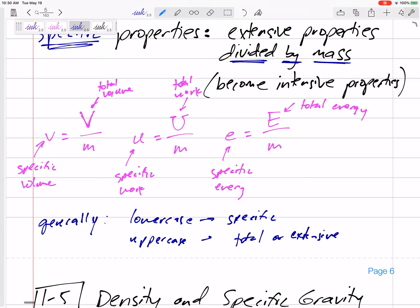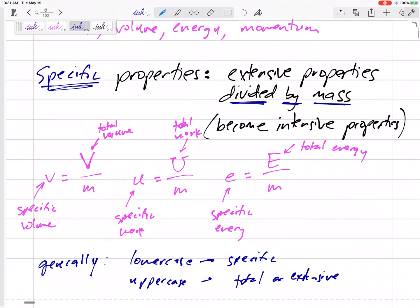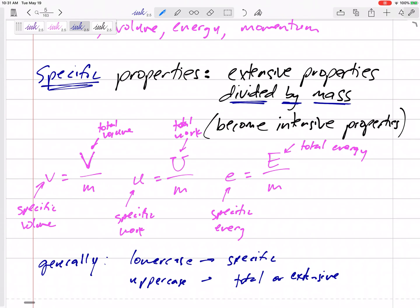Uppercase V is total volume. Uppercase U, total work. Uppercase E, total energy. Very important to pay attention. What are you given? What are you asked to find? What are the units for all of these? Be consistent in all of our problems.